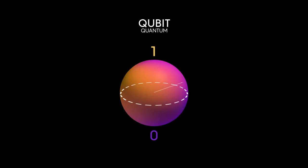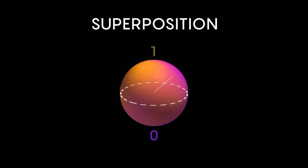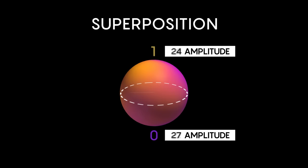Before you measure a qubit, it exists in a state called superposition. You can think about it as a quantum version of a probability distribution, where each qubit has some amplitude for being zero and some amplitude for being one.